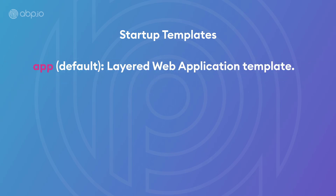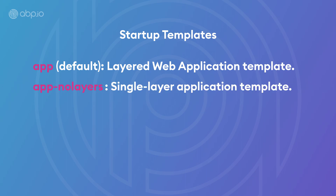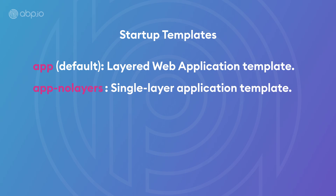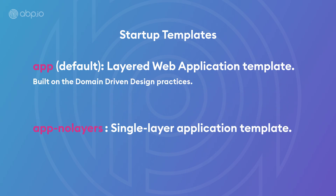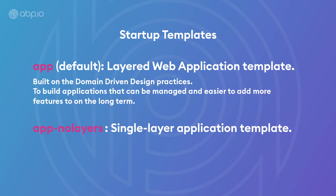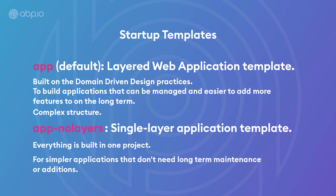The first or default template is the app or application template — it is our main template, built with a domain-driven design, and it'll be the one we're going to be talking about. The second one is the app no-layers, or the single layer application template. The difference is that the application template is built with domain-driven design and is meant for long-term applications — it's a rather complex structure, hard to maintain short-term but easier long-term. The no-layers template, on the contrary, is meant for short-term and simpler applications, and it's only got a single layer.